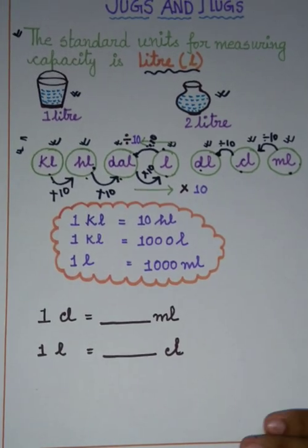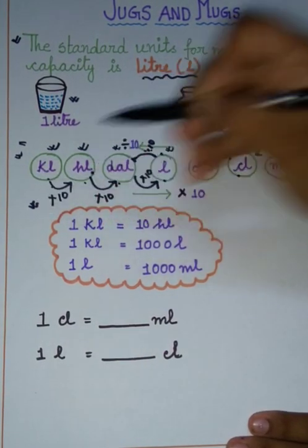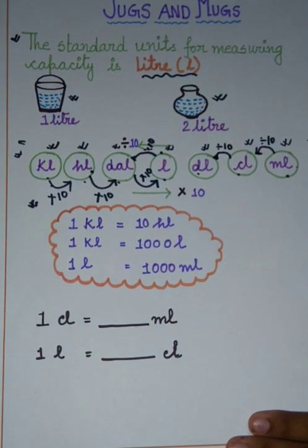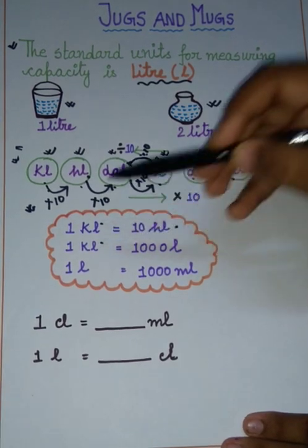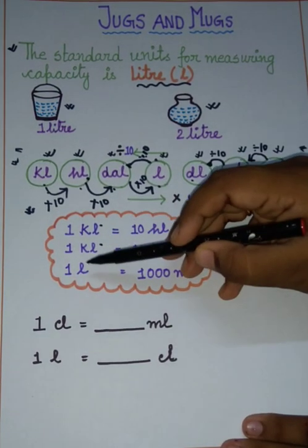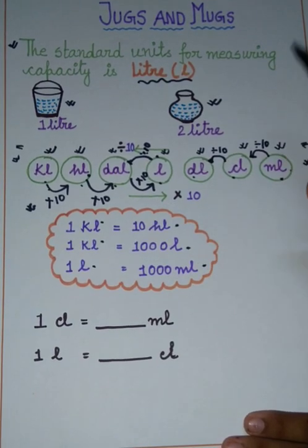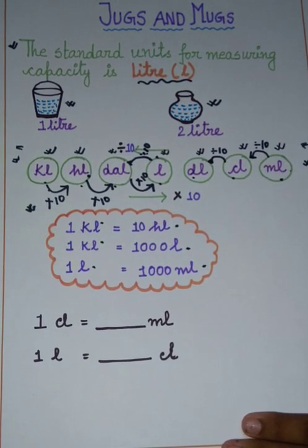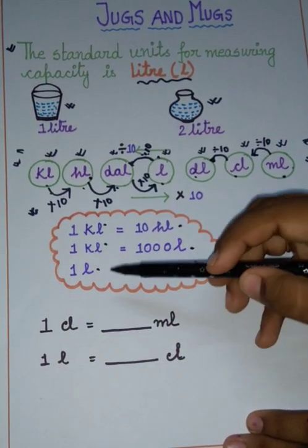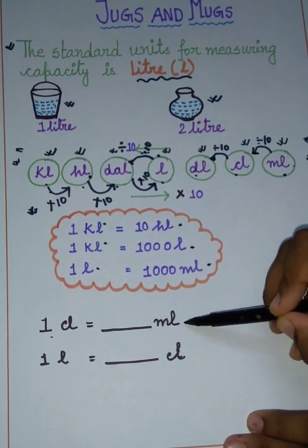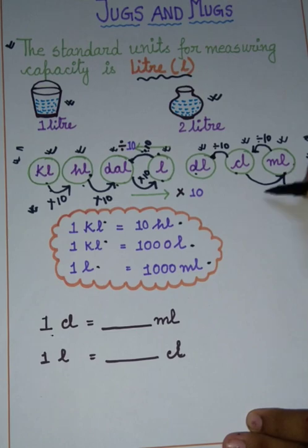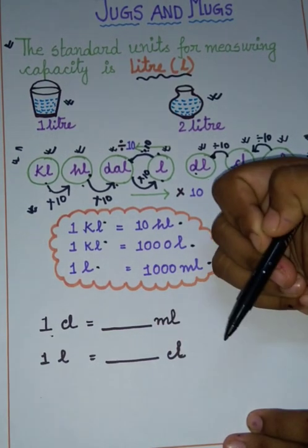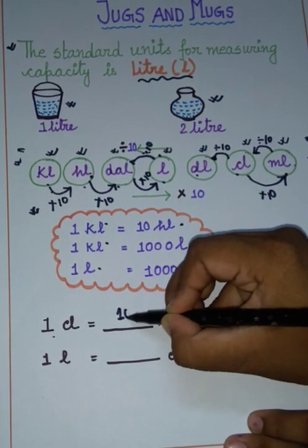There are some important formulas: 1 kilolitre equals 10 hectolitre, 1 kilolitre equals 1000 litre, and 1 litre equals 1000 millilitre. Similarly, we can derive that 1 centilitre equals 10 millilitre, because from centilitre to millilitre we multiply by 10.